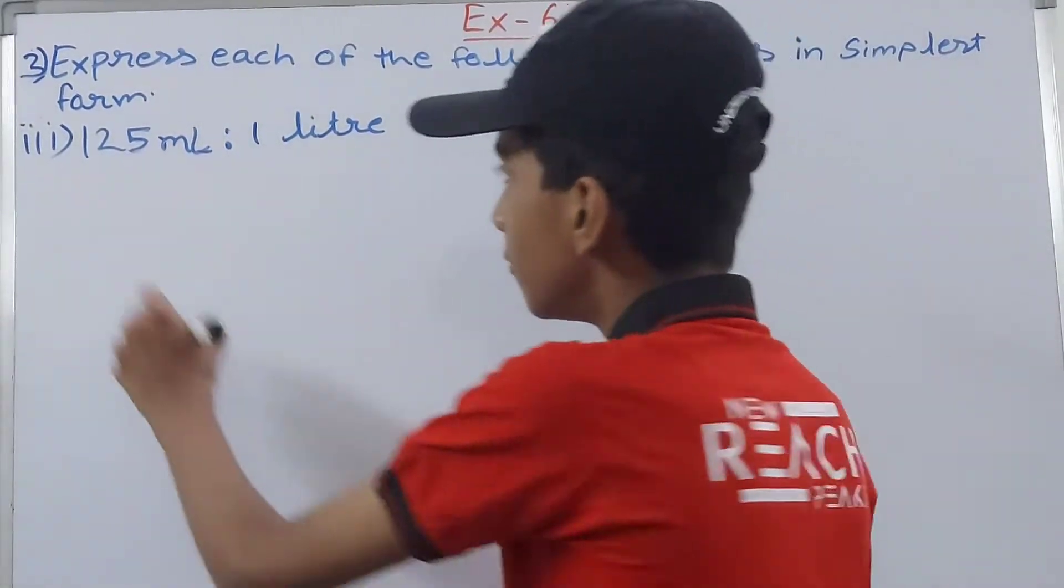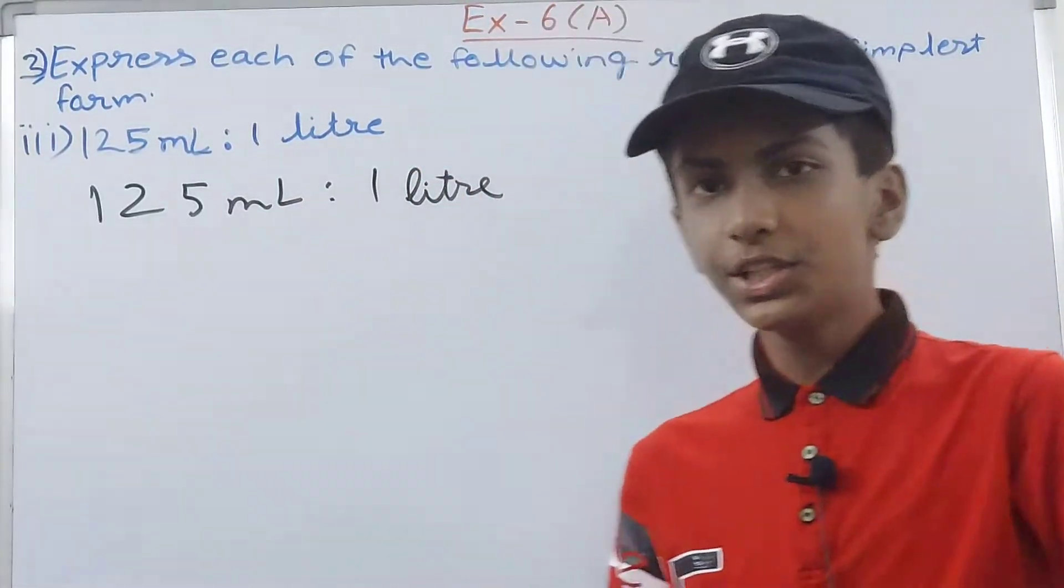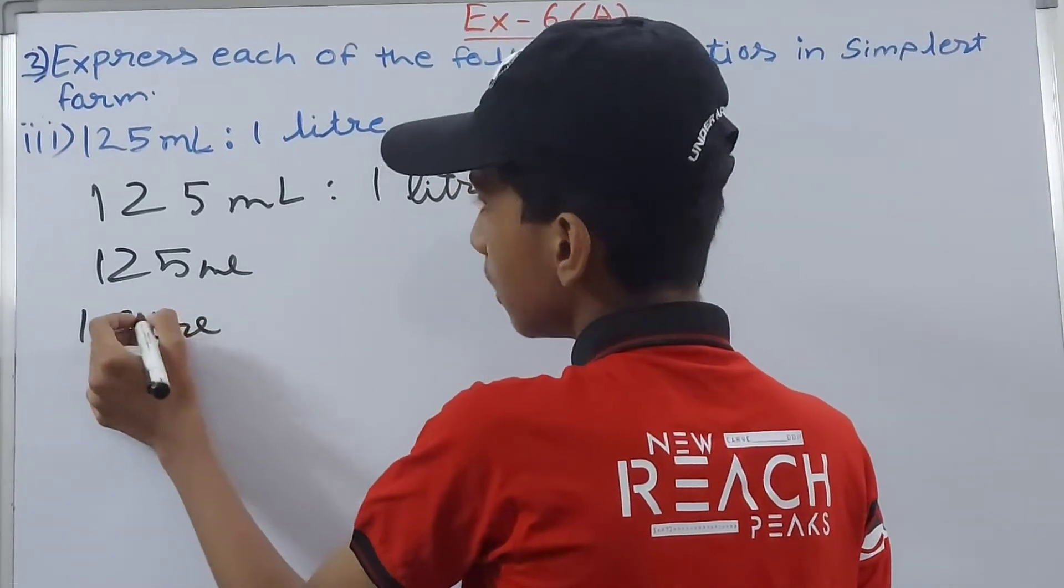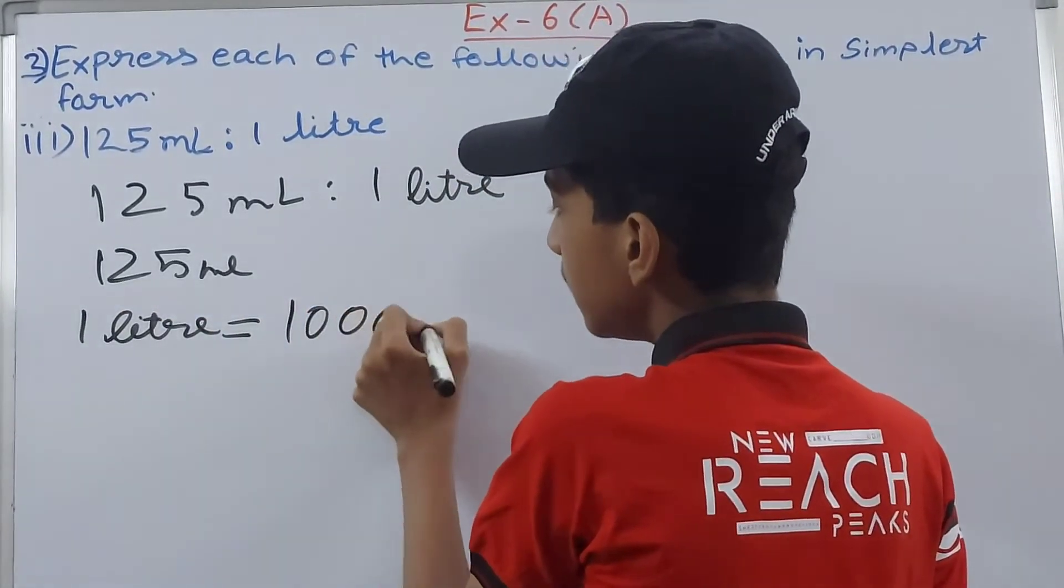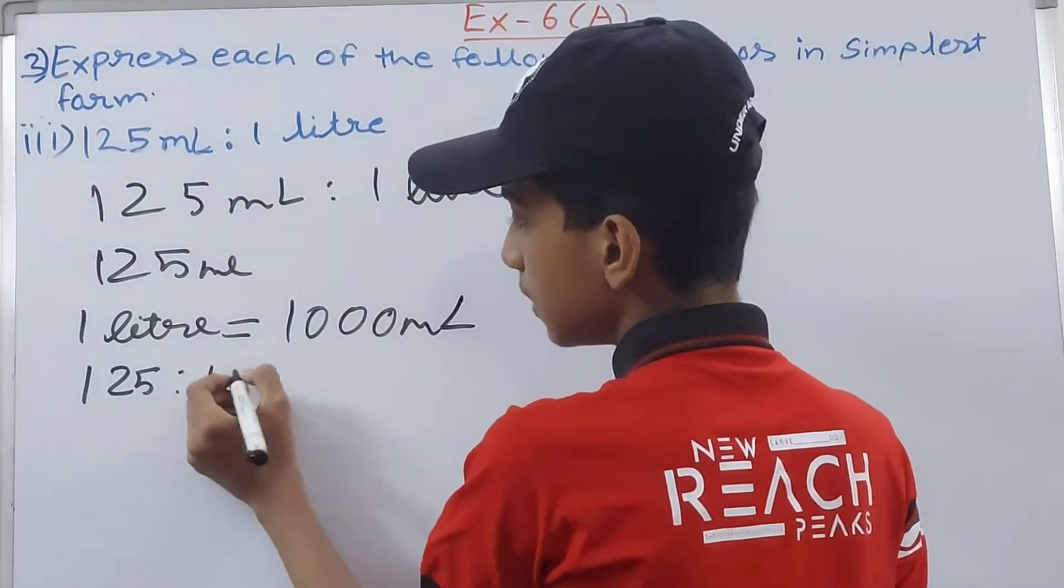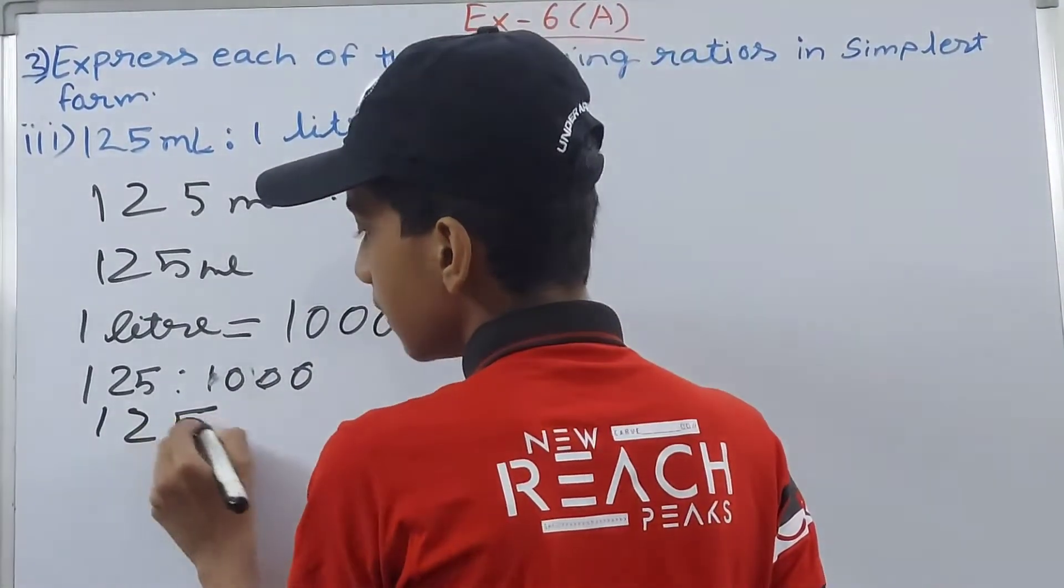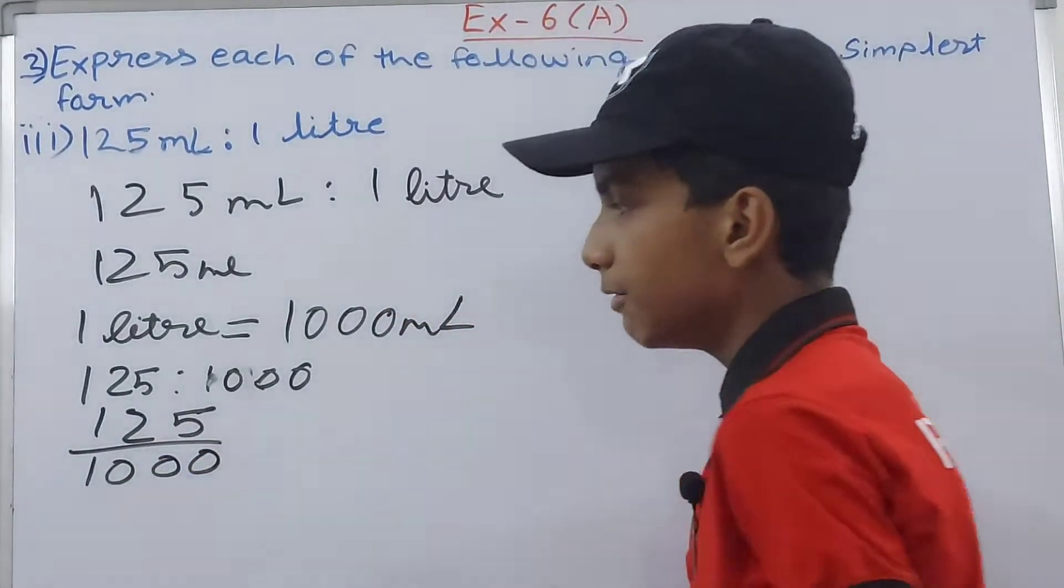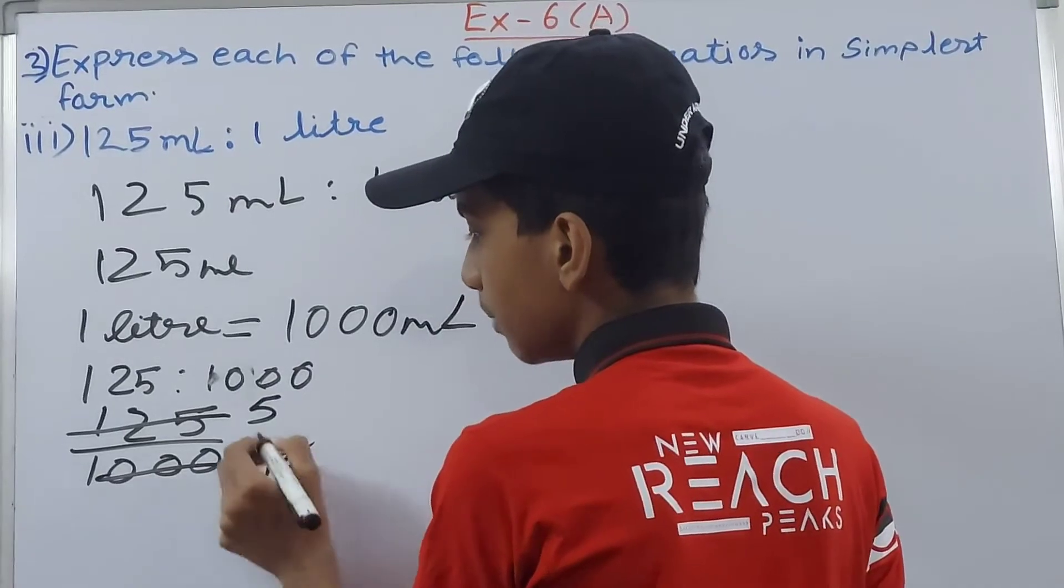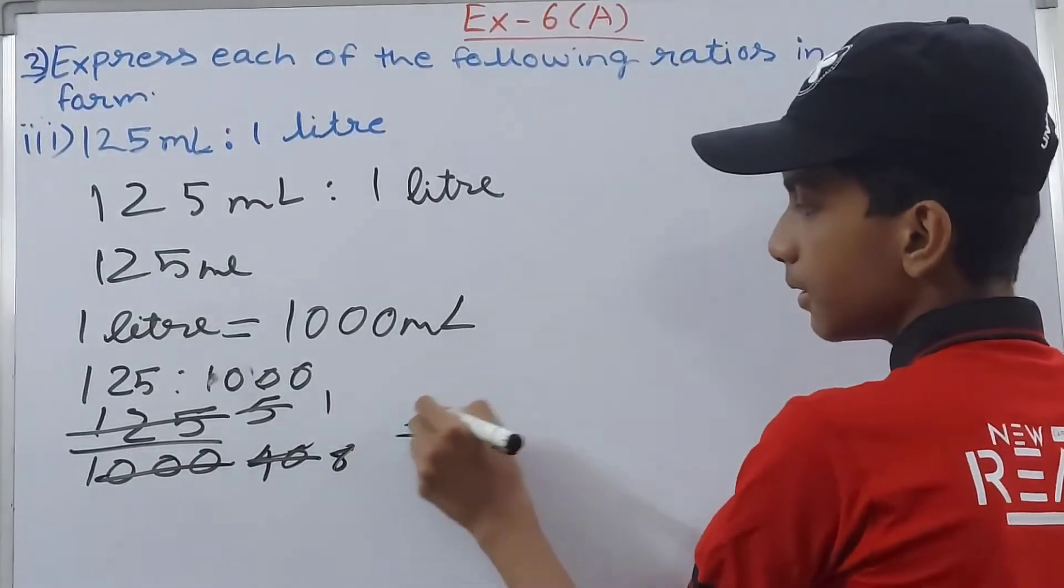Next we have 125 milliliters is to 1 liter. We can write 1 liter as 1000 milliliters. Now make the ratio 125 is to 1000. Don't write the unit in the ratio. We'll have 125 upon 1000. Cancel this by 25 - 5 and 40. Now by 5, so 1 and 8. We will have 1 is to 8 as our final answer.